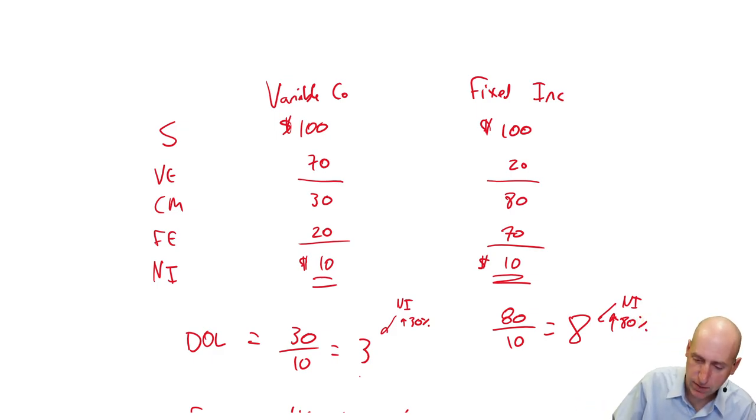So, we're expecting if revenues go up by 10%, for Variable Co, net income is going to go up from 10% to 13%, increase by 30%. For Fixed Inc., we're expecting net income to go up from 10% to 18%, an increase of 80%. Let's actually prove that in our numbers.